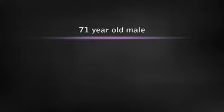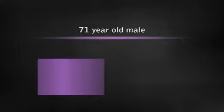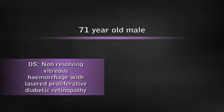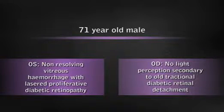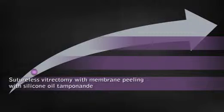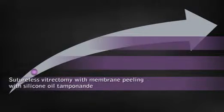A 71-year-old male presented with non-resolving vitreous hemorrhage with laser proliferative diabetic retinopathy in the left eye. The right eye had no light perception secondary to old tractional diabetic retinal detachment. In his left eye, he underwent sutureless vitrectomy with membrane peeling and silicone oil tamponade. The surgery was uneventful.